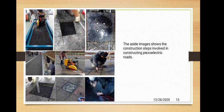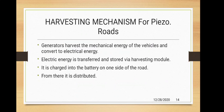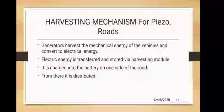In piezoelectric roads, material is embedded within the surface of the road with electrical generating devices. Generators harvest the mechanical energy of the vehicle and convert it to electrical energy. This happens when a force or pressure is exerted on elastic piezoelectric crystal material. Electrical energy is transferred and stored via harvesting modules installed alongside the piezoelectric generators in the road. This stored energy is further used to charge batteries on one side of the road, from where it is distributed.